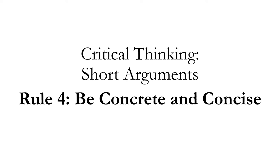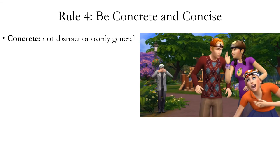Critical thinking rule four: be concrete and concise. Rule four is mainly about the value of expressing oneself clearly in an argument, avoiding being unnecessarily vague, abstract, or complex. All of these things can decrease the clarity of your argument. Let's break apart these two concepts of concrete and concise, because they do have different meanings.